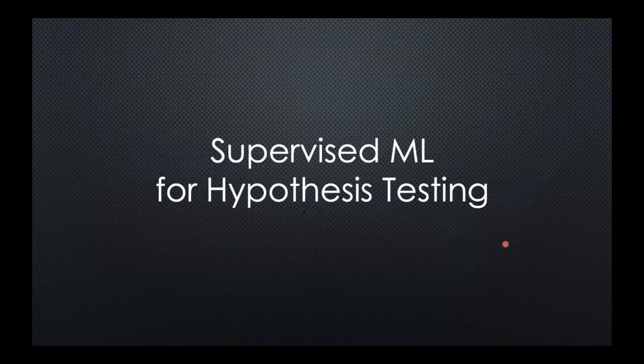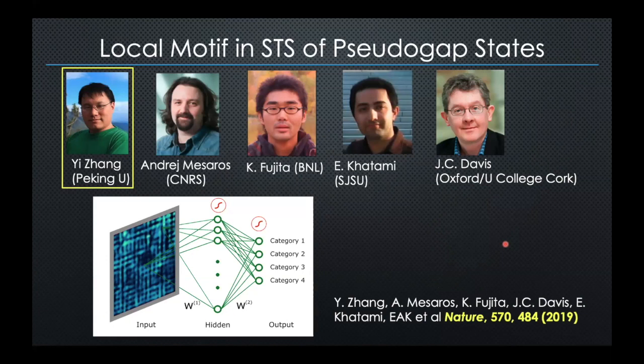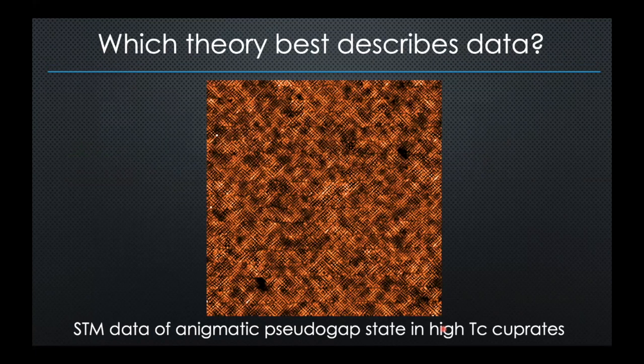Supervised machine learning for hypothesis testing. This work was largely driven by my former postdoc Yi Zhang, who is now an assistant professor at Peking University leading his new group. The starting point was that often when our experimental colleagues have their data, the first thing they think about is: how should I think about this data? What is the right way to look at it? Which theory describes my data best?